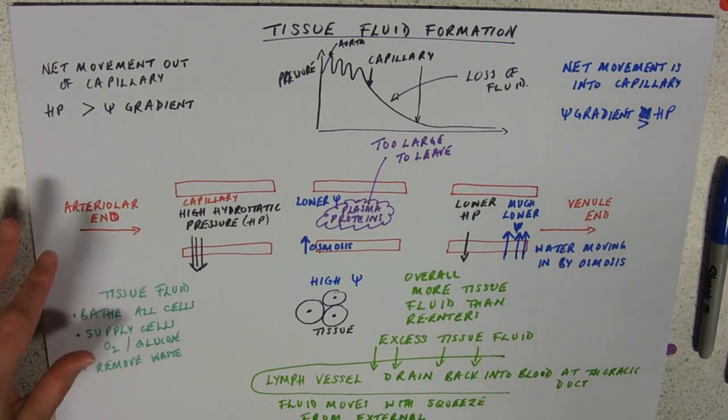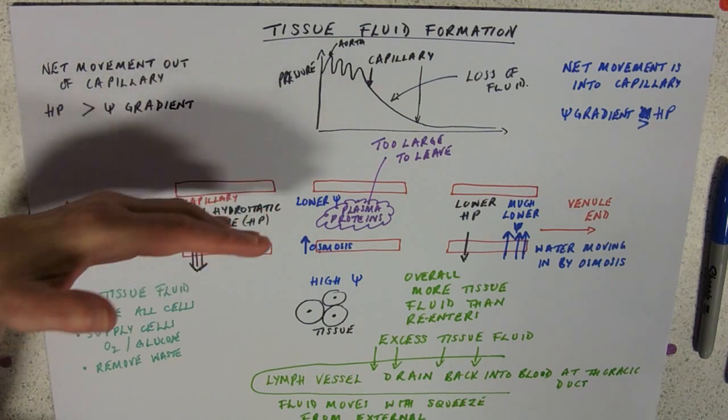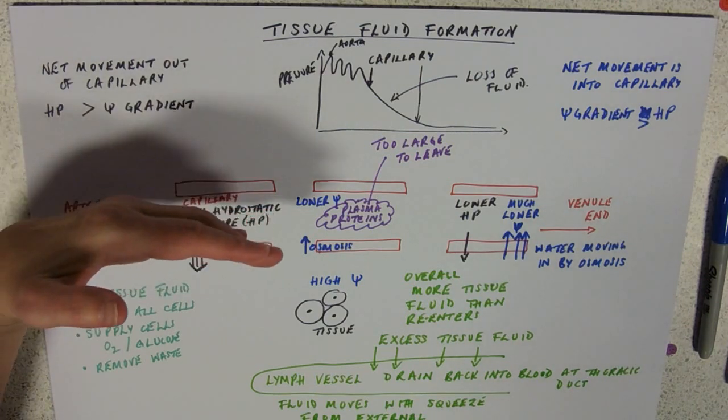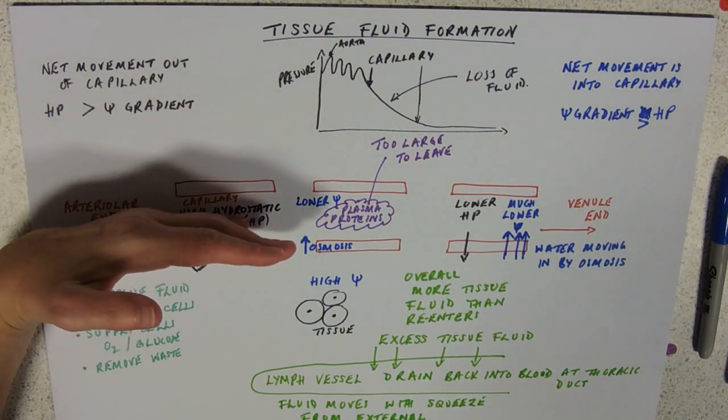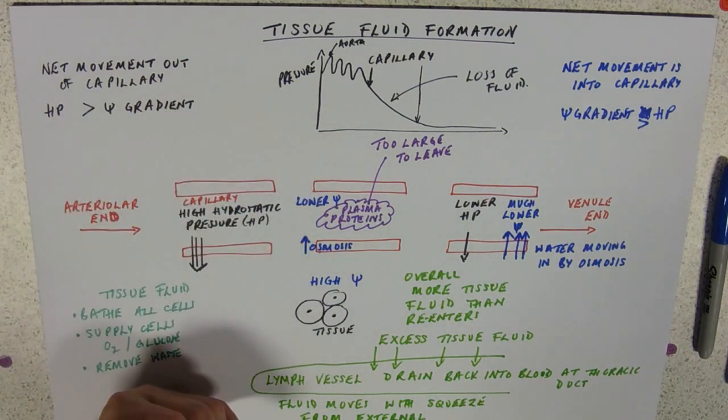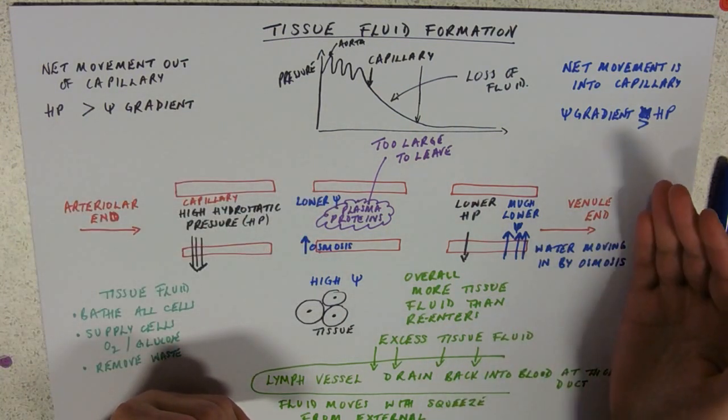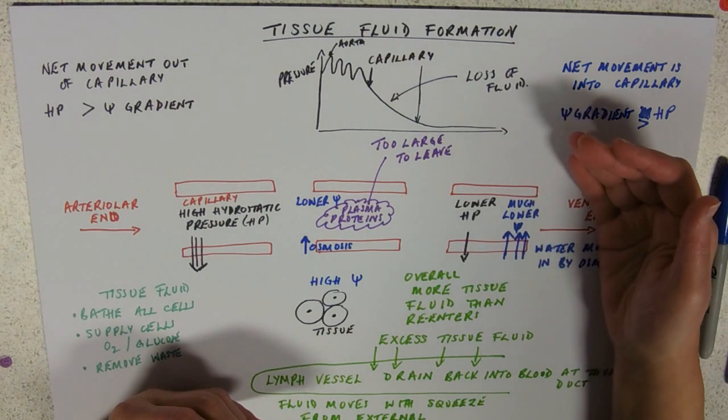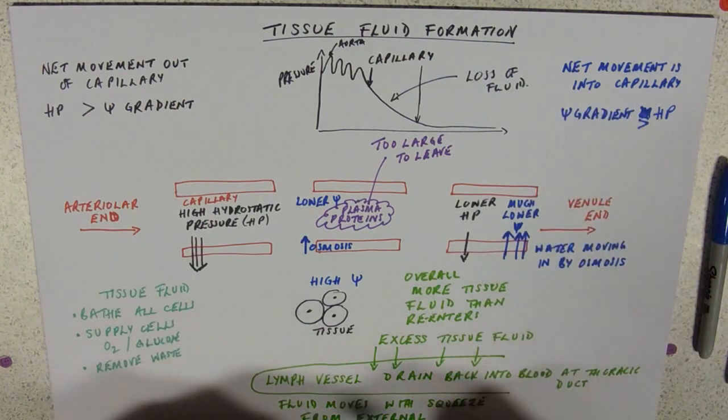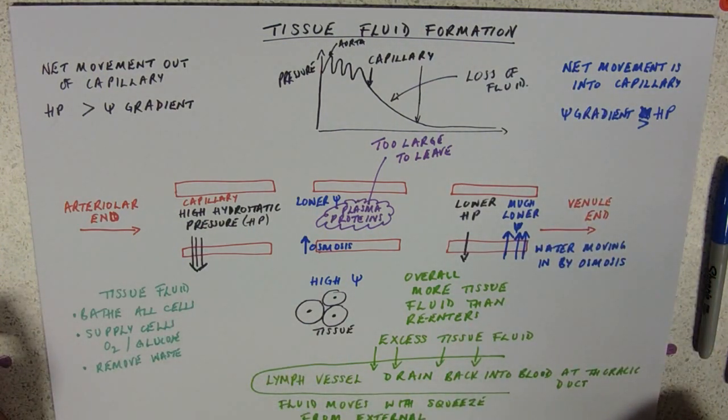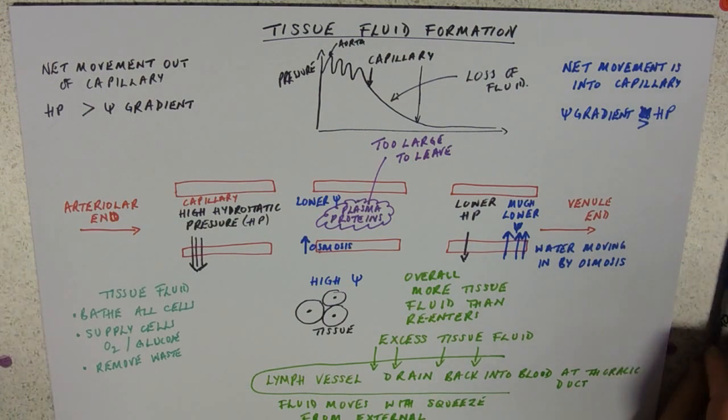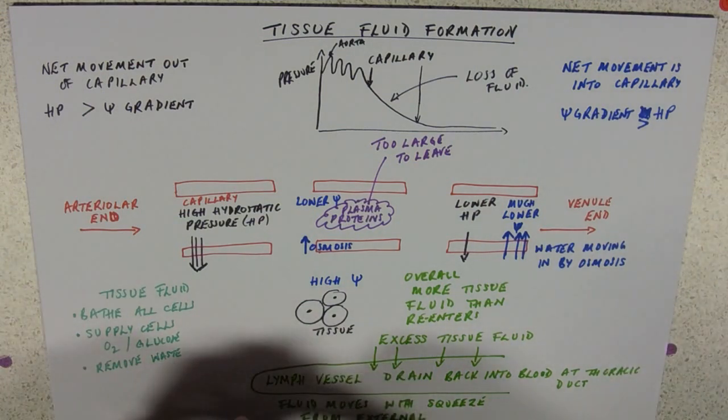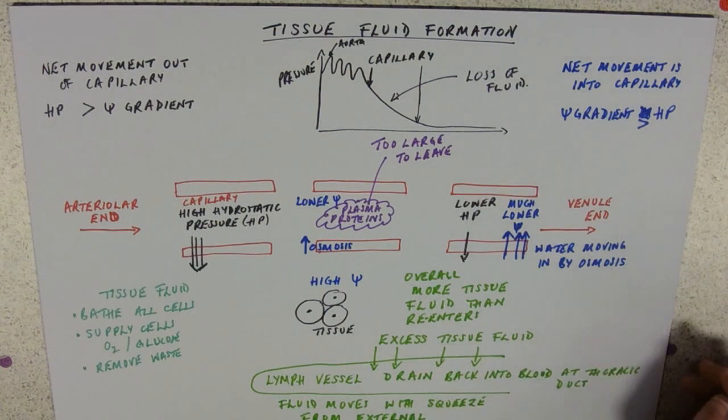Key things to remember here, that the hydrostatic pressure at the arteriolar end exceeds the water potential gradient and pushes fluid out. At the venule end, the water potential gradient exceeds the hydrostatic pressure, so the water moves in by osmosis and any excess drained away by lymph. Okay, I think that's it. I've been told I haven't to say enjoy learning that because it sounds too sarcastic. Sorry.